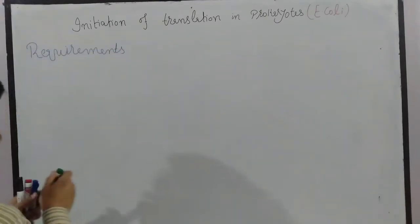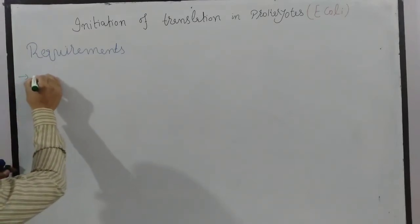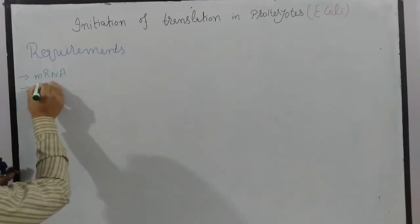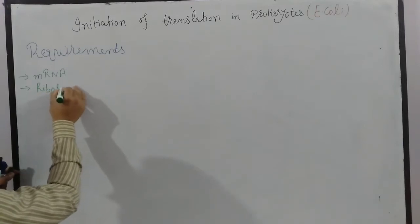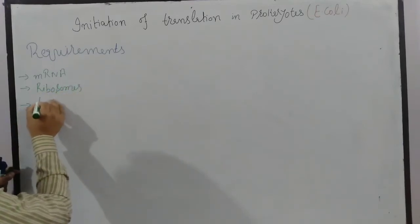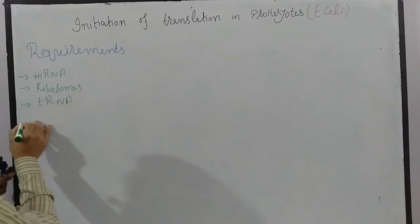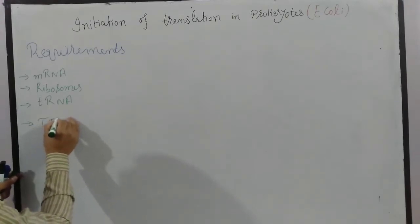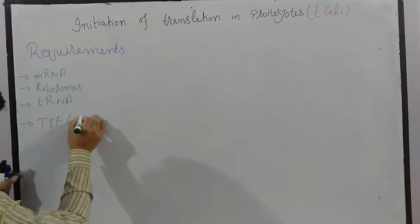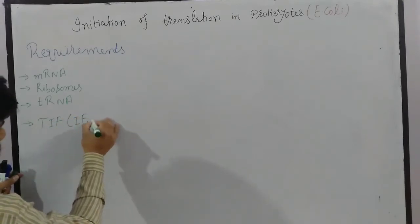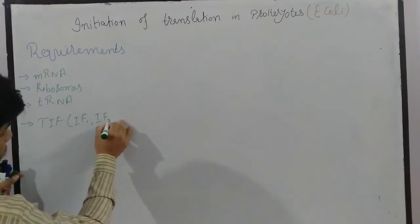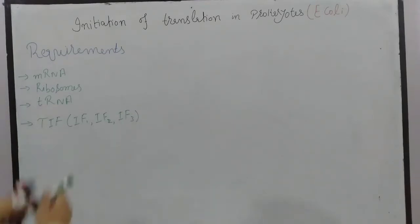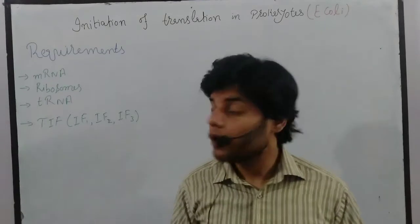For initiation of translation we need: messenger RNA, ribosomes, transfer RNA, and translational initiation factors — specifically IF1, IF2, and IF3. These are the main things required in initiation of translation.